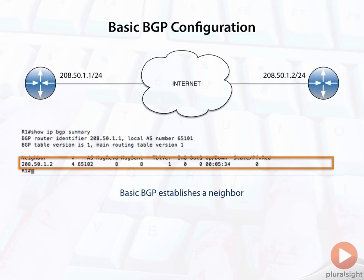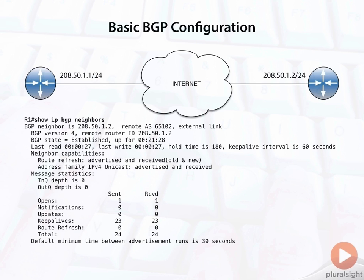Let's look at a more detailed output. This is the output of the 'show IP BGP neighbors' command. If I had more than one neighbor, I'd have to scroll through this list. But you'll notice here that I can also see the BGP state, and that the state is established. BGP goes through its own states in addition to the state of the TCP connection. The first thing that would have to happen with BGP is we go through the three-way handshake and establish a TCP session, and then BGP can actively negotiate the neighbor and establish the session.